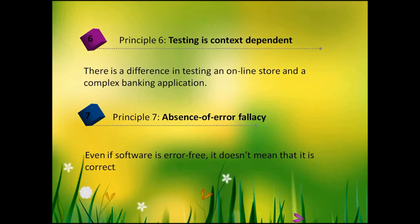The seventh principle: absence of error fallacy. Assume a client requested development of a mobile alarm application. Requirements were prepared, the application was well designed, code was written, and testers verified it worked perfectly according to requirements. However, nobody needed this application — users didn't have a need for it because everyone already had their own alarm. So even if software is error-free, it doesn't mean it is correct or useful.